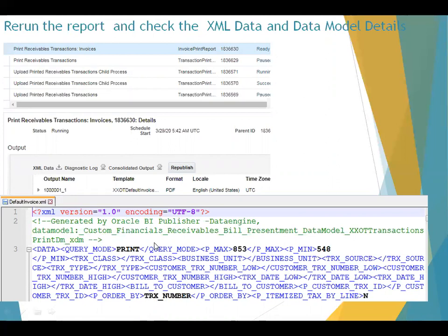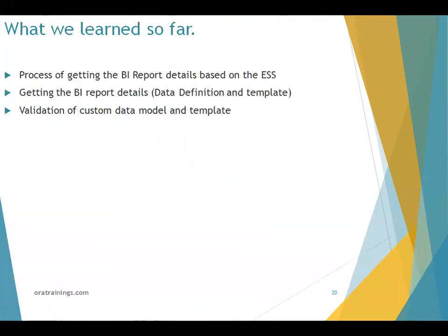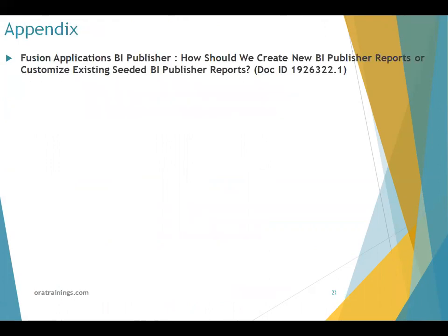So this is how we can modify a standard data model as well as a standard template. What we have learned so far: the process of identifying the BI report based on the ESS job, finding out the report definition and template, and validating the custom data model as well as the custom template. You can also check the referenced MetaLink note to get more insights into this particular process. Thank you.